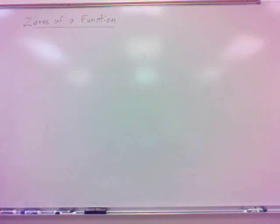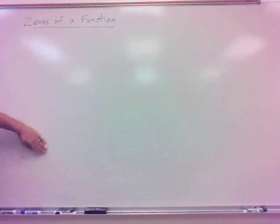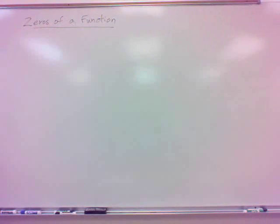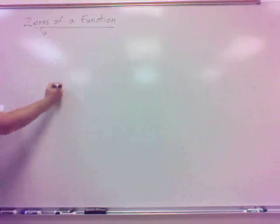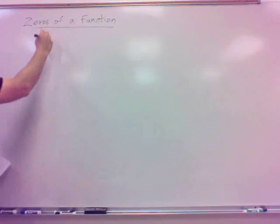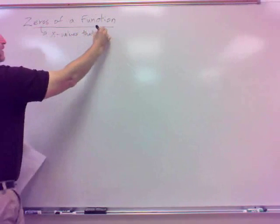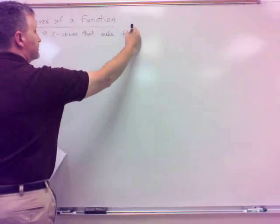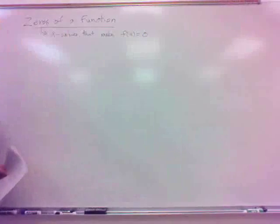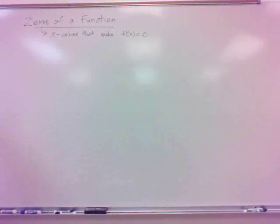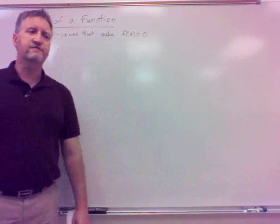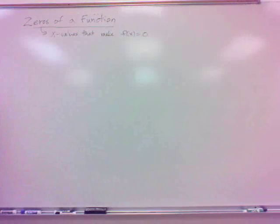We're going to be talking about zeros of a function today and next time. What do I mean by zeros of a function? Zeros of a function are the x values that make the function value — f of x, usually our notation of choice — equal zero.